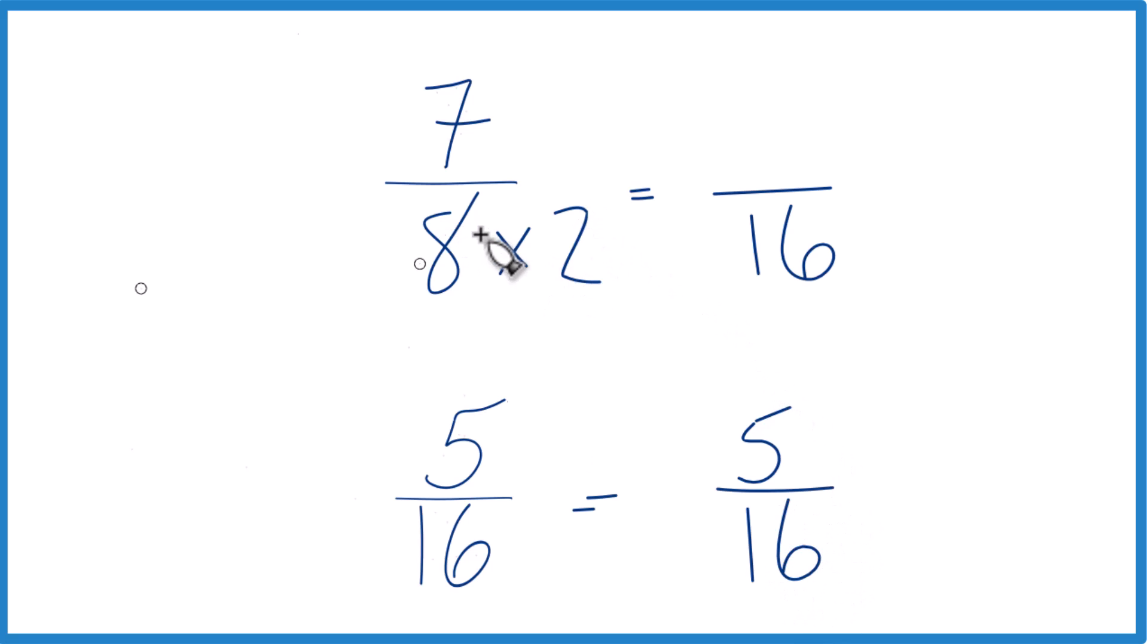And we can't just multiply the denominator by 2, we need to multiply the numerator by 2 as well. 2 over 2 is 1, so we're just multiplying by 1. We don't change the value, just the way it's represented.